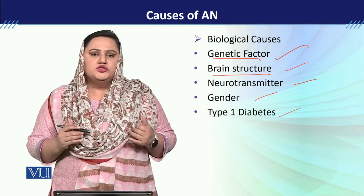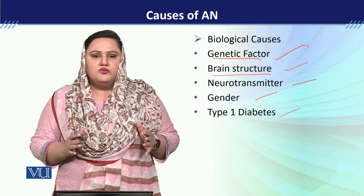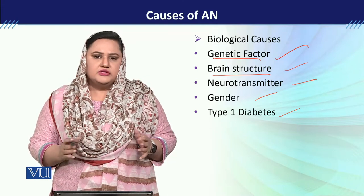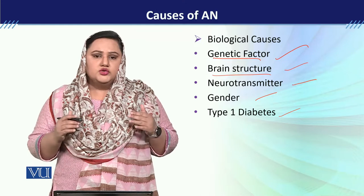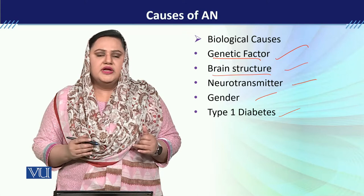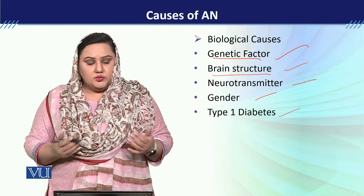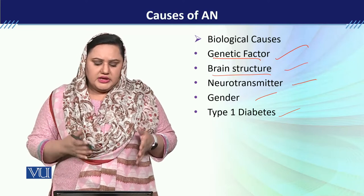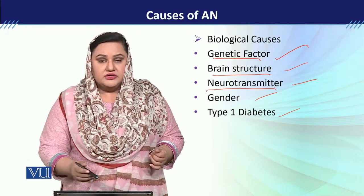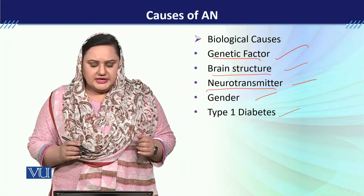Along with this, the prefrontal cortex and the temporal cortex also play a role in anorexia nervosa. The temporal cortex is relevant to the perception of body image. So if there is any kind of problem in it, there are very high chances that anorexia nervosa can develop, because in anorexia nervosa, the body perception is distorted.